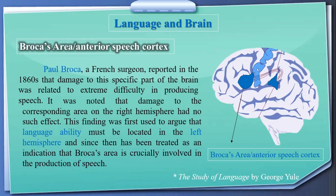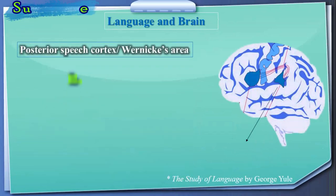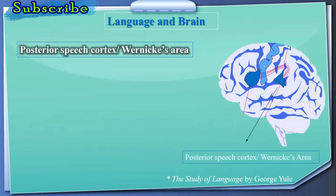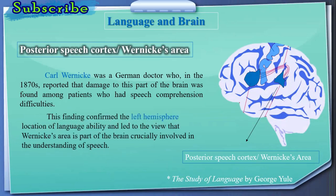This finding was first used to argue that language ability must be located in the left hemisphere, and since then has been treated as an indication that Broca's area is crucially involved in the production of speech. Karl Wernicke, a German doctor, reported in the 1870s that damage to the posterior speech cortex — Wernicke's area — was found among patients who had speech comprehension difficulties.